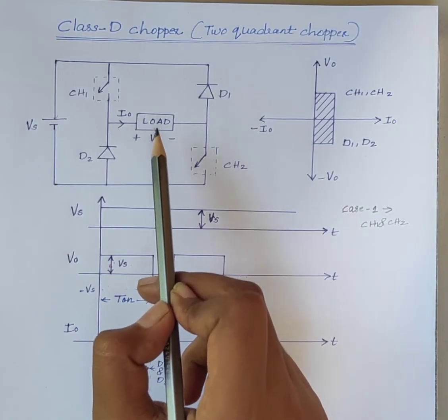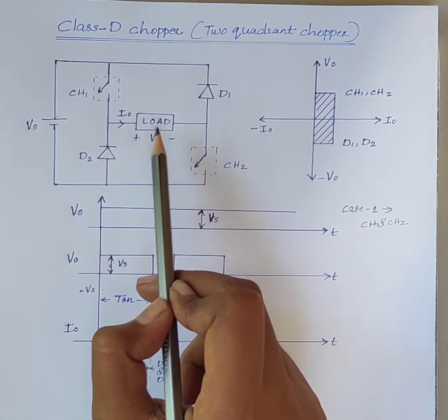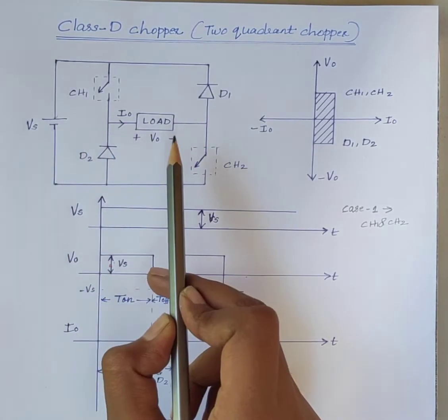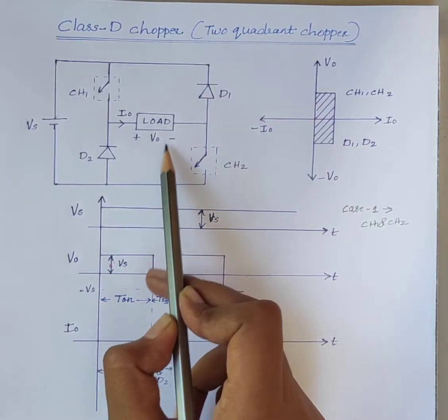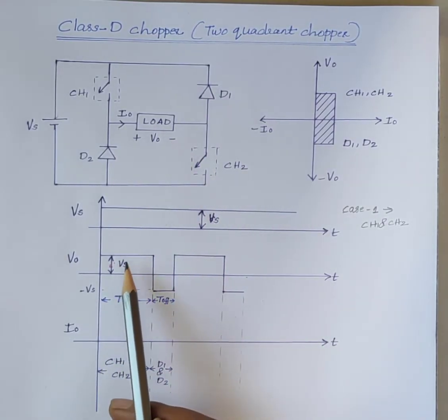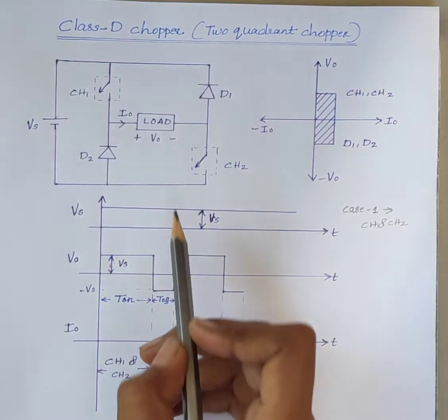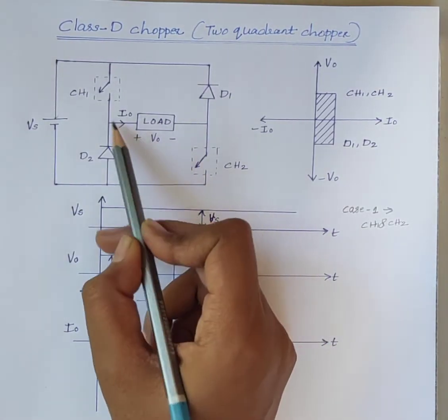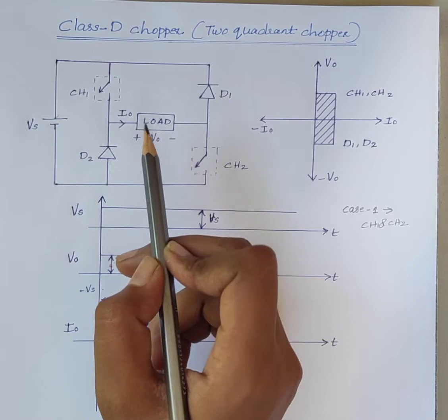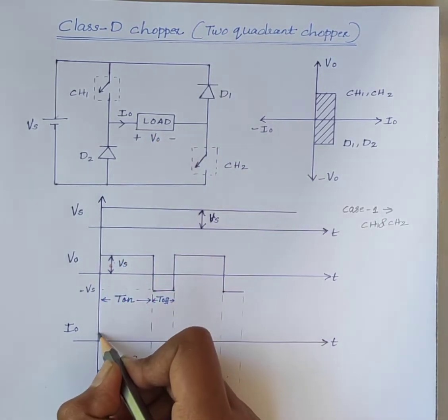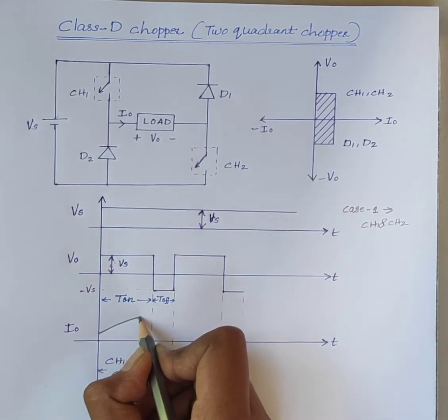The load is directly connected to the source. Therefore, the output voltage V0 equals the supply voltage. Also, the output current I0 is positive and increases gradually.